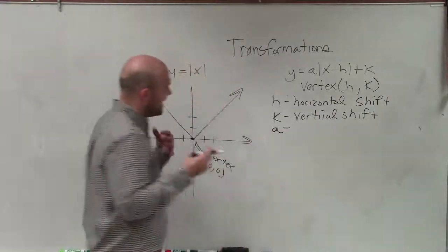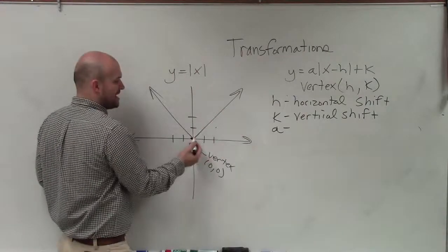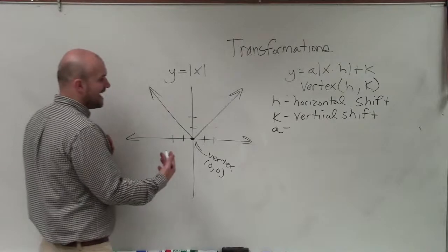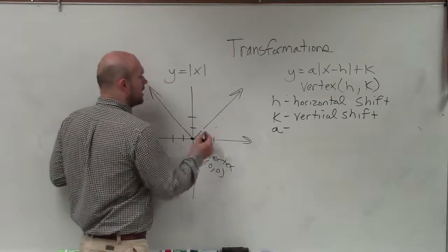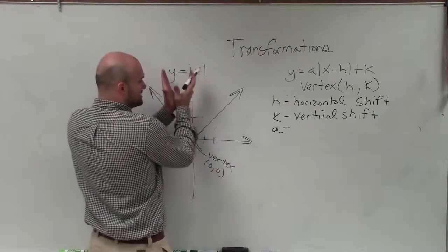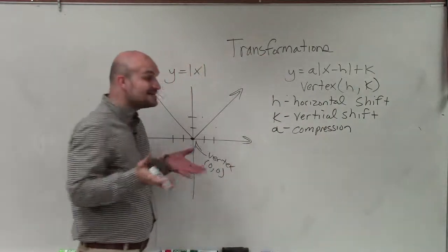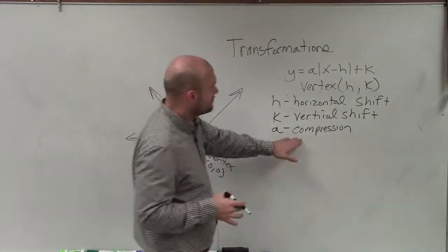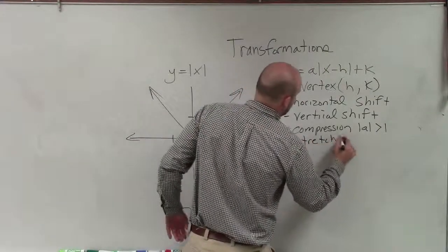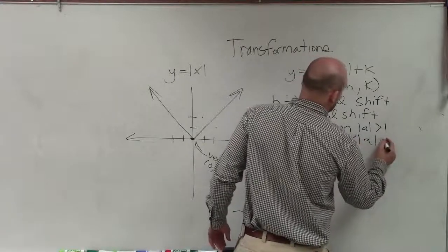The next thing is the a value. What a does is affect the slope of the graph. As you can see, going over 1, up 1 — we continue that pattern. But if I have an a that is larger than 1, say 2, instead of going over 1 up 1, it goes over 1 up 2. So when a is larger than 1, the slope gets much steeper — what we call a compression. However, if a is less than 1, it's going to be a stretching — it makes the graph wider. So it's a compression when the absolute value of a is greater than 1, and a stretch when the absolute value of a is greater than 0 but less than 1, meaning it's a fraction between 0 and 1.